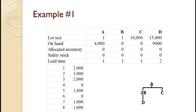Item A is produced lot per lot. There are 4,000 on hand with no allocated inventory and no safety stock. Lead time is one period. Item B is produced lot per lot, with none on hand and a lead time of one period. Item C is ordered in lots of 10,000, with none on hand and a lead time of one period. Item D is ordered in lots of 15,000, with 9,000 on hand, no allocated inventory, no safety stock, and a lead time of two periods. Notice I said produced for A and B but ordered for C and D — the bill of material tells us this. If there are components below an item, we manufacture it; if not, we purchase it.